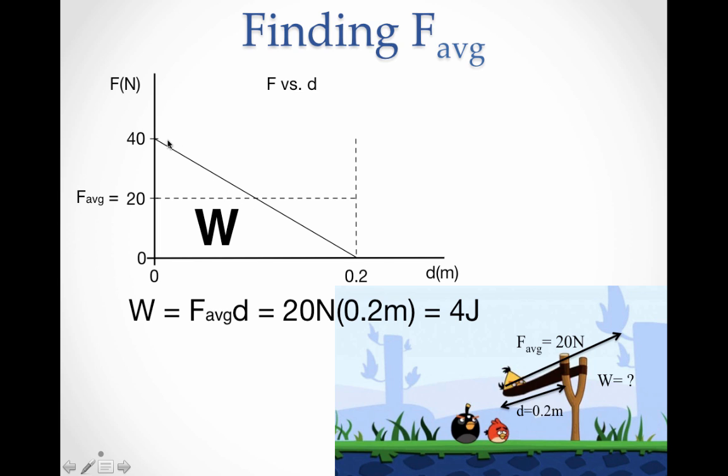Because half the time the force is above 20, and half the time the force is below 20. If you use the sandbox method, and this was a pile of sand, and you shook the sandbox, you could see that it would level out at 20. If you do your math average, you take the force, the first force, 40, add it to the second force, 0, and then divide by 2, and you would get 20. So no matter how you cut it, the average force is 20 newtons in this case.